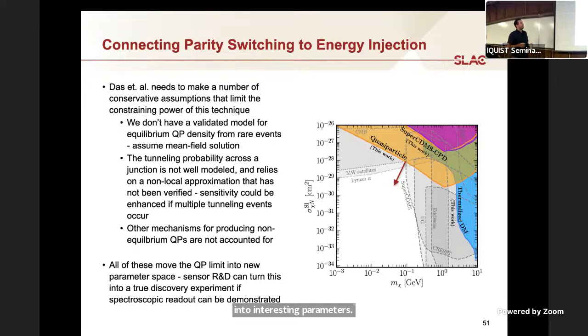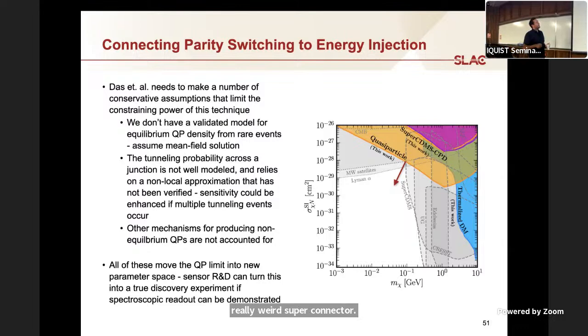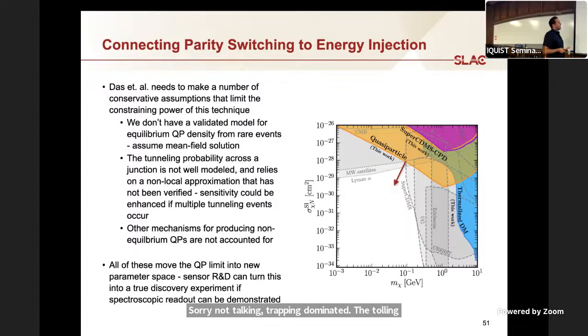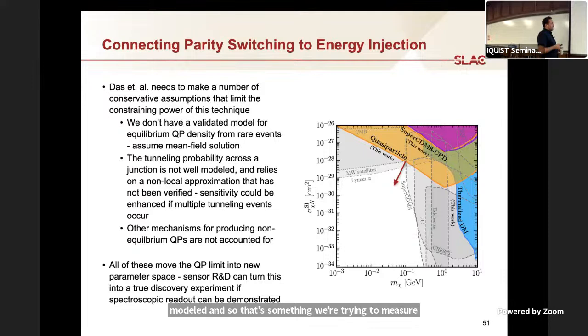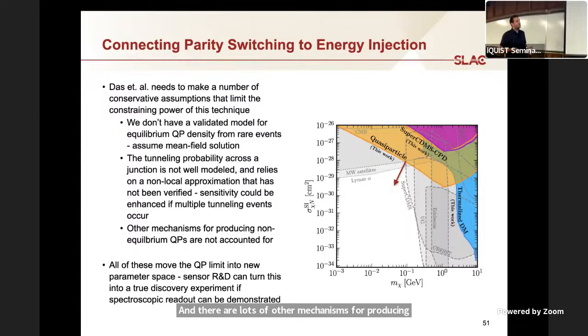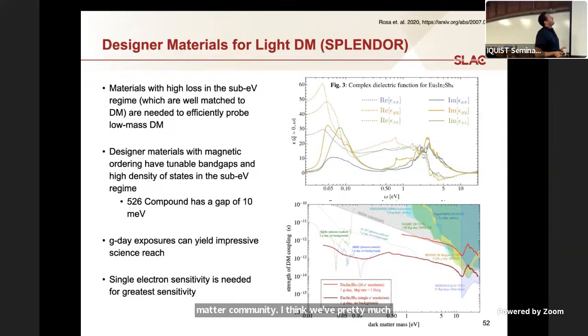It would really have to be a really weird superconductor. We don't really have a validated model for how equilibrium QP density relaxes. We think it's tunneling dominated. You'd have to find a recombination dominated superconductor. Sorry, not tunneling, trapping dominated. The tunneling probability across the junction isn't really well modeled. That's something we're trying to measure, but it's not going to drag this by more than a factor of 10. And there are lots of other mechanisms for producing non-equilibrium QPs, including radiation. Those are much more energetic and frequent than dark matter. This was an idea that was bouncing around the dark matter community. I think we pretty much said, no, this isn't a problem.